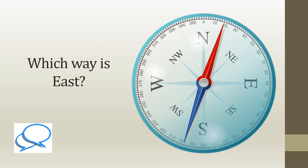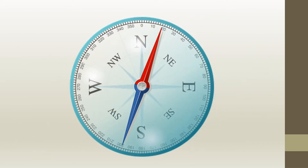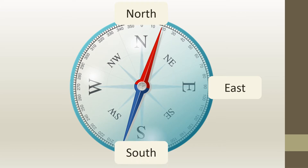Which way is east? There are four main directions on a compass including north, east, south and west. E is for east, and this is the direction sailors would travel to reach the East Indies.